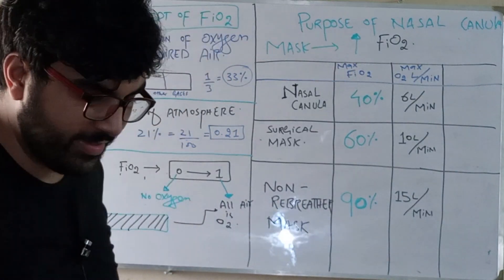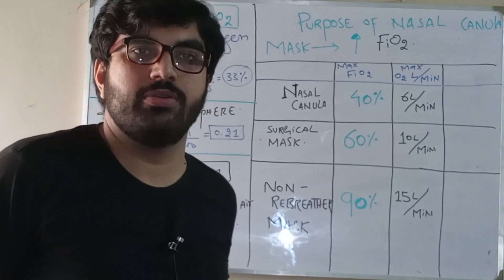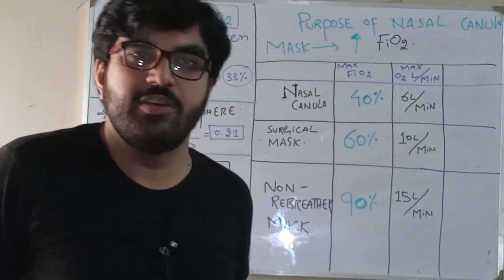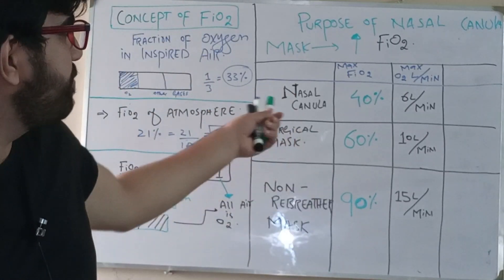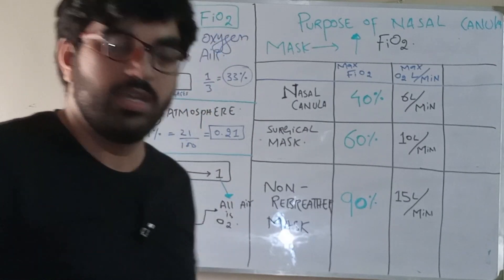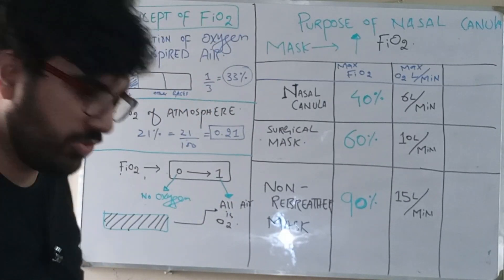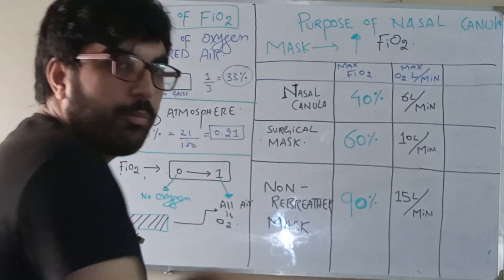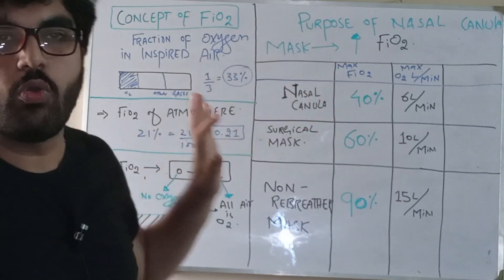Bismillahirrahmanirrahim, so today's lecture is very important regarding the situation of a patient if they are not maintaining SATS. We do not know what is the purpose of nasal cannula, where to start - one liter oxygen, five liter oxygen, ten liter oxygen. So in order to understand that, first we must know what is FiO2.